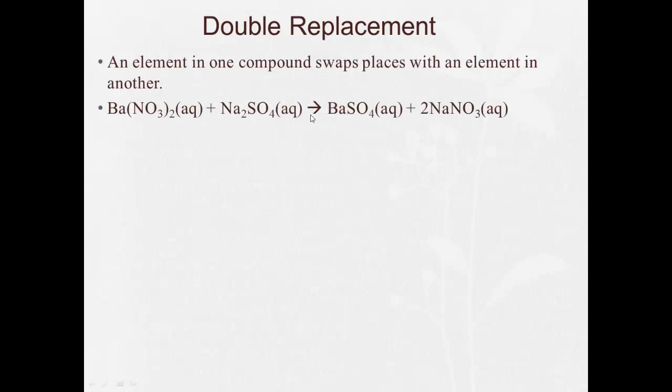The next is a double replacement, and that's where an element in one compound swaps places with an element in the other. They swap, they trade places. So we can see here that initially we have barium nitrate and sodium sulfate. The products, we have barium sulfate, the barium took the place of the sodium, and sodium nitrate, the sodium went back and took the place of the barium. They just traded places.